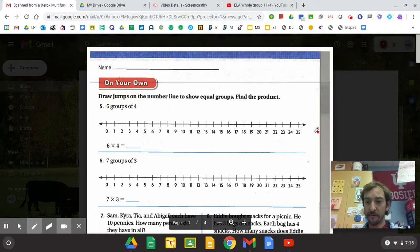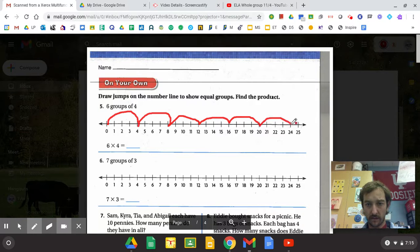So what I'm going to do is jump by four six times. So I start at zero and go four, eight, twelve, sixteen, twenty, twenty-four.